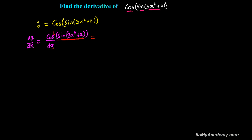So I will be differentiating cosine of sine 3x squared plus 2 with respect to its angle. That is the derivative of cosine of sine 3x squared plus 2 with respect to its angle, sine 3x squared plus 2.